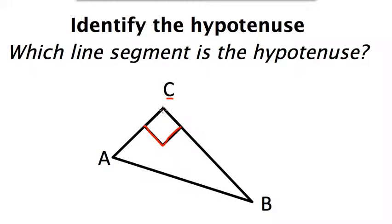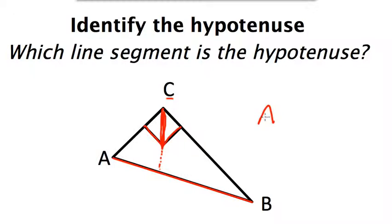Then my hypotenuse — if I take that right angle mark and draw a line like this to make it an arrow, that arrow continues on so that it points to my hypotenuse, which in this case is this line right here. So for this particular problem, line segment AB is my hypotenuse.